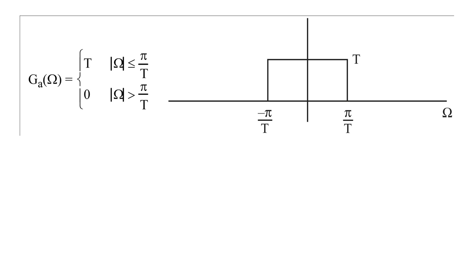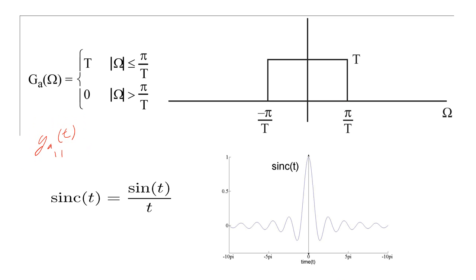Therefore, our G sub a of omega would look like this. If we take the inverse Fourier transform of G sub a of omega, we discover that our D to A, G sub a of t, must be a sinc function.